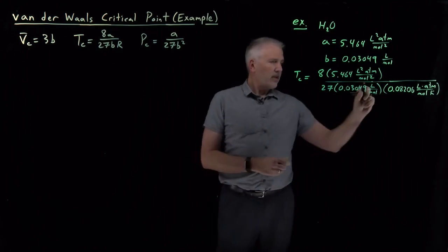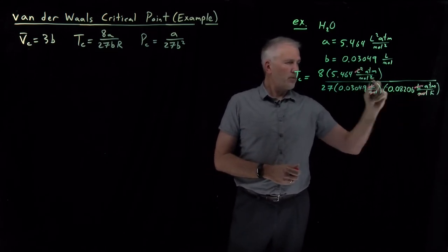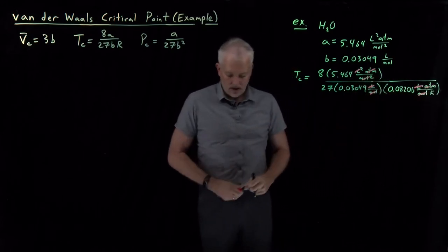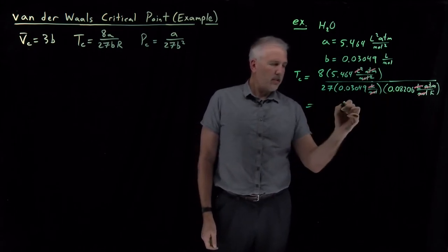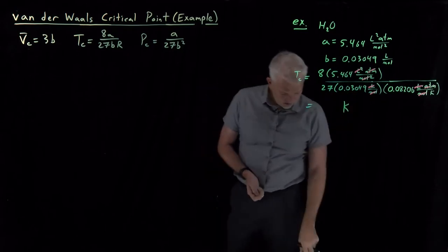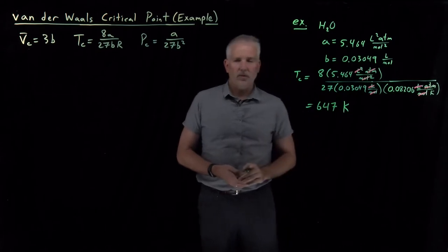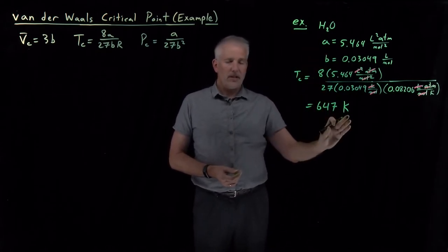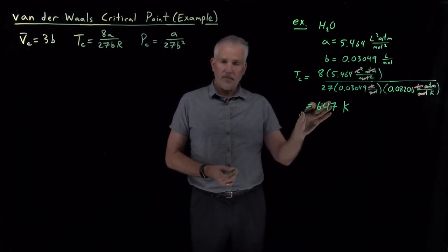And then liters and liters cancel, moles and moles cancel, atmospheres cancel atmospheres, and one over one over Kelvin gives me a critical temperature in units of Kelvin. And that quotient works out to 647 Kelvin. Van der Waals constants predict a critical temperature of 647 degrees Kelvin for water.